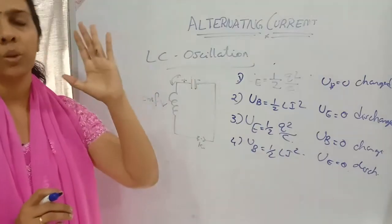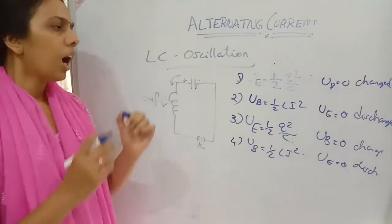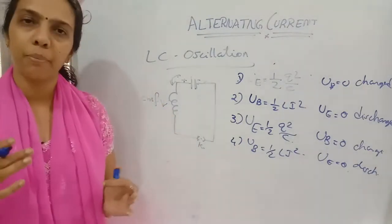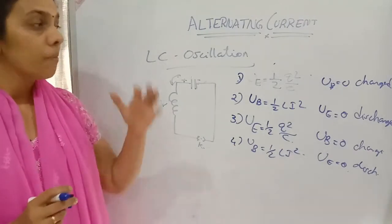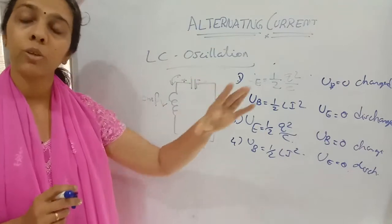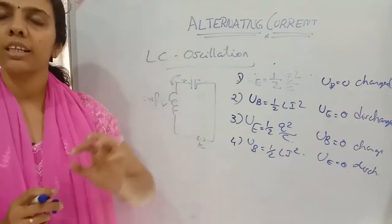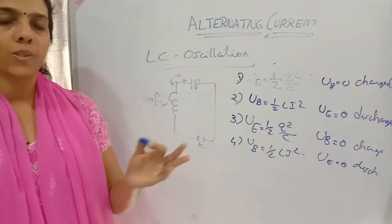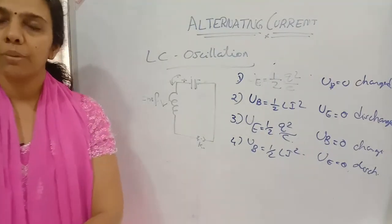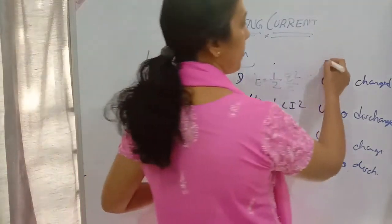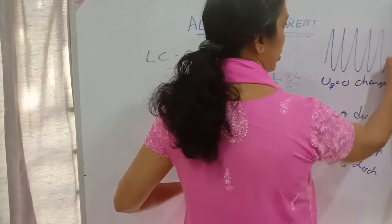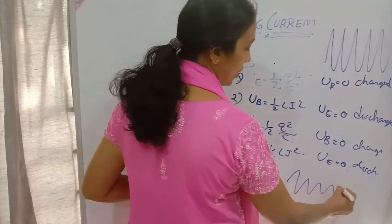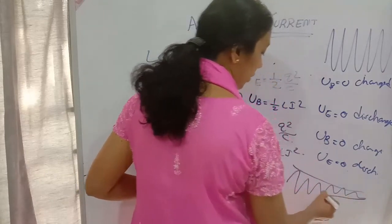Now, in practical terms, is this an undamped oscillation? No — in practical cases, heat energy losses occur for many reasons, so the oscillation will be damped. But theoretically, it is treated as an undamped oscillation. Practically, it will be a damped oscillation.